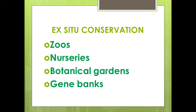Ex-situ conservation is the conservation of biodiversity through breeding and maintenance of endangered species in artificial ecosystems such as zoos, nurseries, botanical gardens, and gene banks. There is less competition for food, water, and space among the organisms. Animals are provided with a longer lifespan and better breeding activity. Species bred in captivity can be reintroduced into the wild, and genetic techniques can be used for the preservation of endangered species.